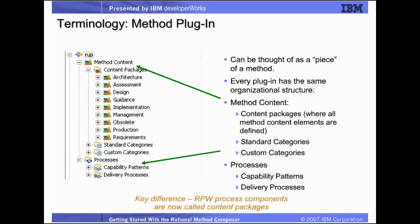A plugin contains both method content and process definitions. Examples of plugins are RUP, COTS — or Commercial Off-the-Shelf — which can be built using RUP as the base. Within the RUP plugin, you can see folders for both method content and processes. Within the method content folder, you can see subfolders for content packages, standard categories, and custom categories. Within the content packages folder, you can see individual content packages for subsections of the RUP method definition — for architecture, assessment, design, guidance, and so forth. Within each of these packages, in turn, you would find roles, work products, and tasks defined for each section.